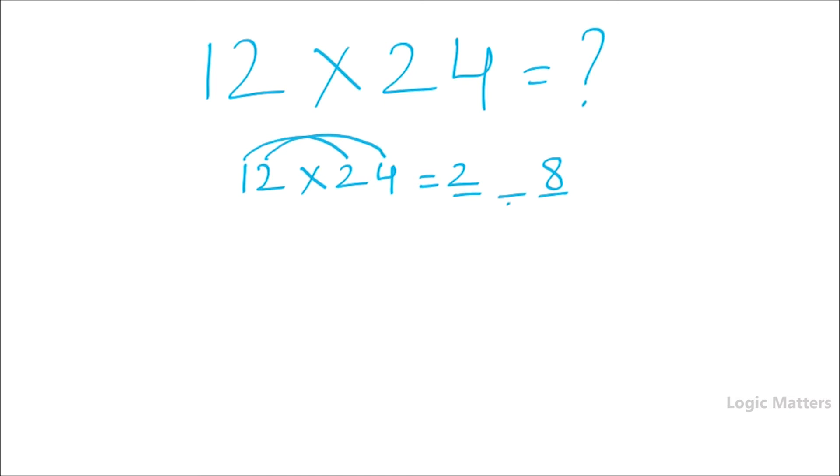So to do that, we need to multiply these two numbers. So 2 into 2 is 4, and also multiply these two numbers: 1 into 4 is 4. Now we need to add these two numbers. So 4 plus 4 is equal to 8. Now we need to place this value in here. So the answer is 288. Simple, isn't it?